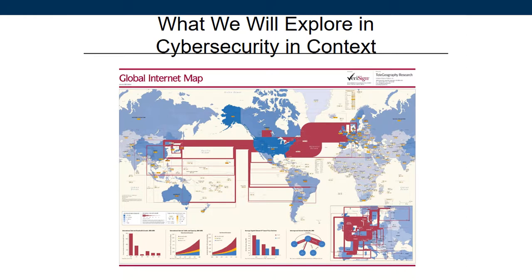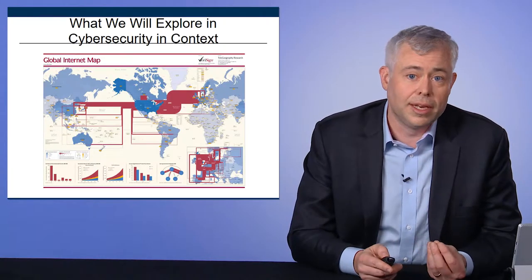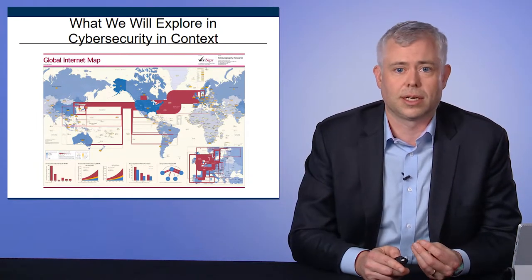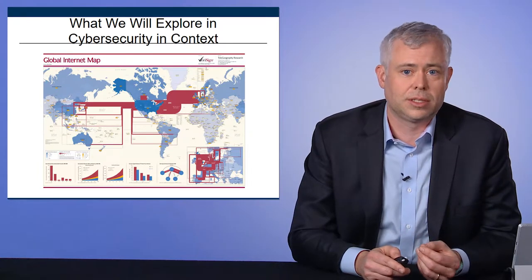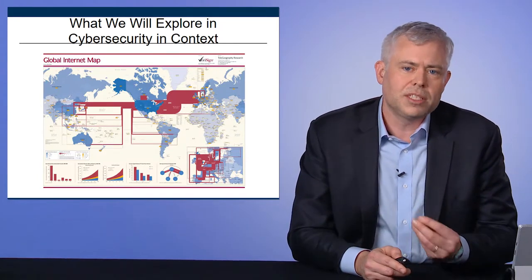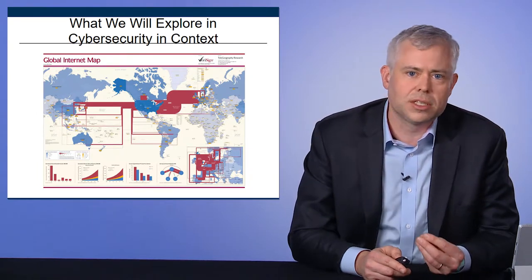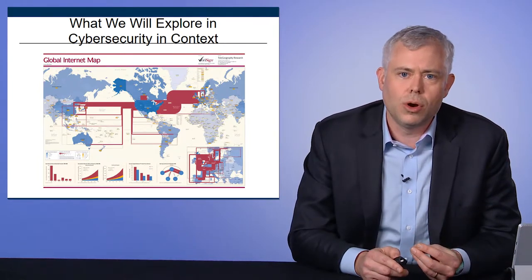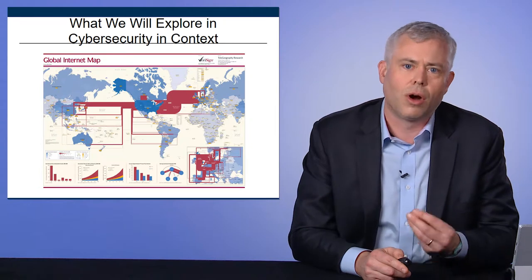This map shows how internet communications are routed around the world. You'll notice this enormous red band that goes through the United States. This gives us tremendous cybersecurity power — the ability to see how other people are using the internet and other internet-connected technologies, such as even voice telephonic lines. This map is one of the reasons why the BRICS nations — Russia, South Africa, China, and the like — are trying to build their own internal internets. It's because of our dominance.